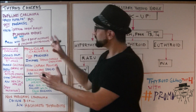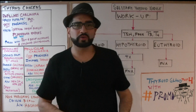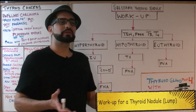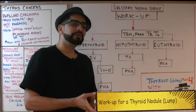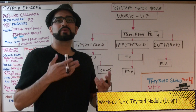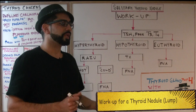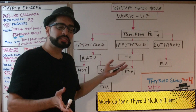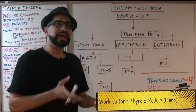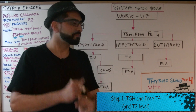The thyroid cancers are listed on this side of the board over here. First we want to go through a workup — meaning, what happens when on a physical exam you're examining the patient and you feel a thyroid nodule. A nodule is a lump in your thyroid gland. You want to go through a step-by-step approach to make sure the nodule is non-cancerous, and in case it is cancerous, determine the next procedure.